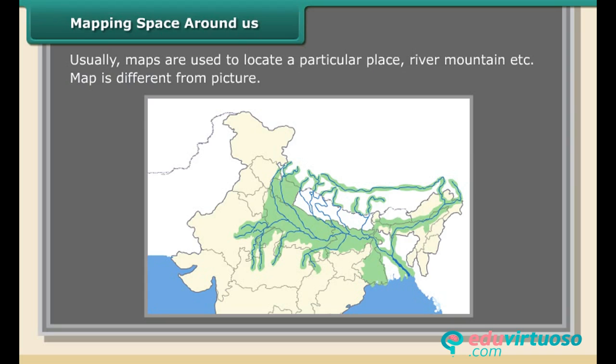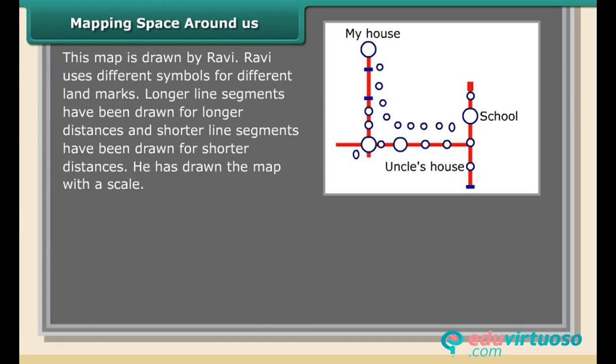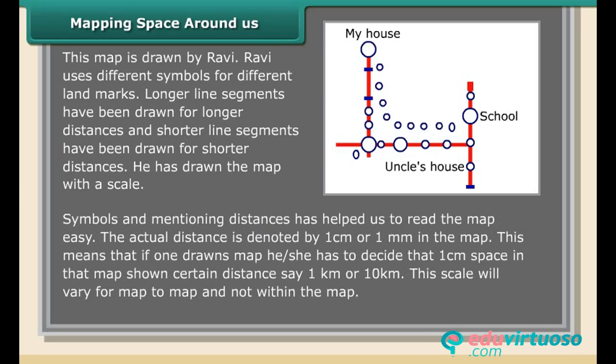This map is drawn by Ravi. Ravi uses different symbols for different landmarks. Longer line segments have been drawn for longer distances and shorter line segments have been drawn for shorter distances.